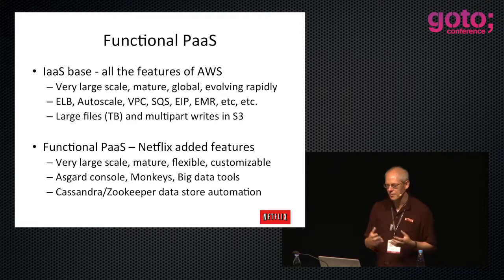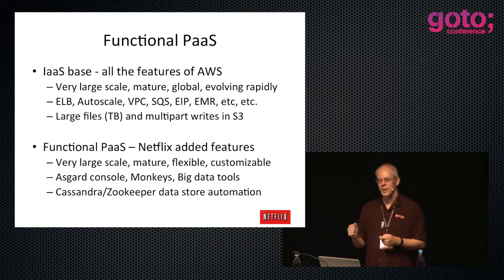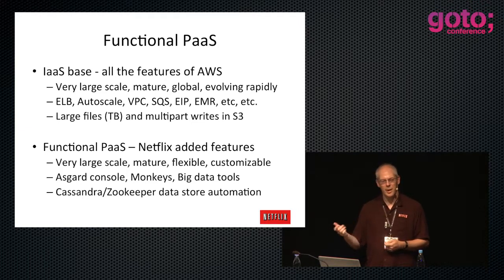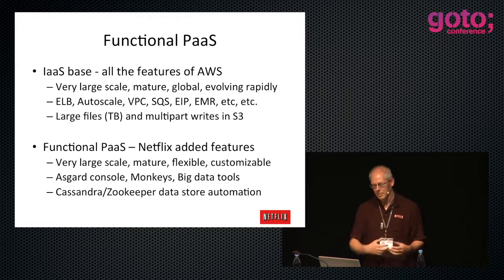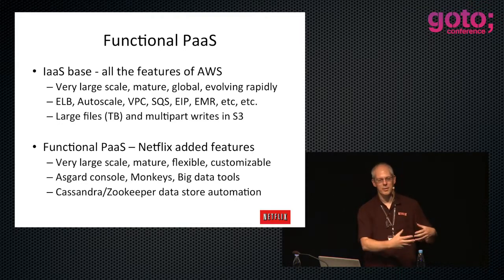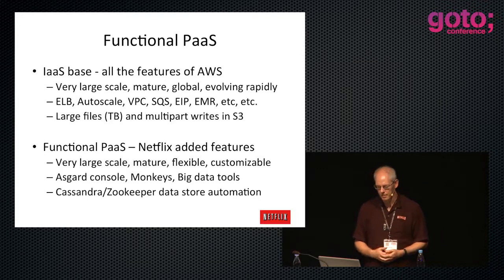What we have as an infrastructure base is every feature of AWS, including all the ones we've beaten them up to develop. They have missing features; we keep pointing them out and Amazon listens, and maybe six or twelve months later the feature pops out. Meanwhile we've built something that does that, then we retire ours and use the Amazon one.